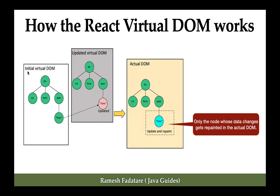React then compares the initial virtual DOM and the updated virtual DOM to identify the changes. In the diagram, React compares both virtual DOMs and identifies the node that changed — in this case, the time node. In the DOM, each element represents a node. Once React identifies the changed node, it updates only that change in the actual DOM. Only the node whose data changed gets repainted in the actual DOM, which improves application performance.